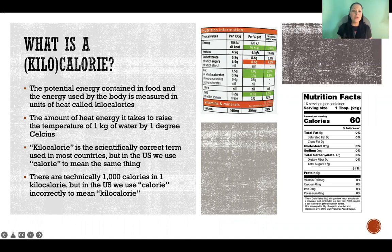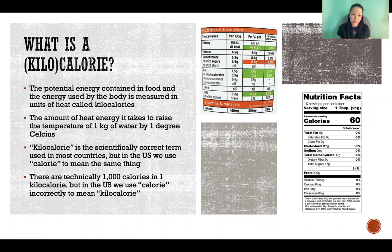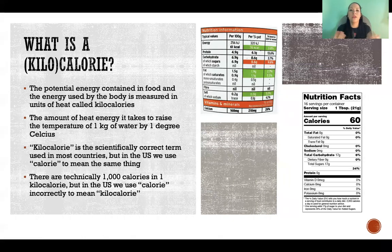Kcal is equivalent to what we refer to as a calorie in the U.S. That is technically incorrect, but that is the convention here. There are technically and mathematically a thousand calories in one kilocalorie — hence the prefix kilo. But in the U.S. we have the convention of using just calorie to mean the same thing as kilocalorie.